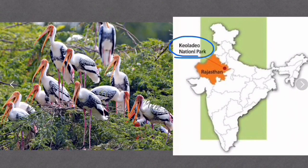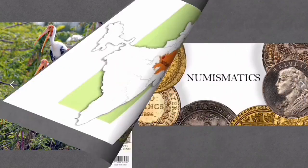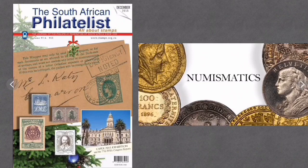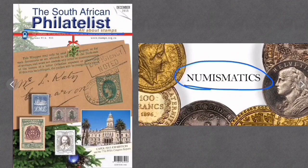Next: Keoladeo National Park is located in Bharatpur, Rajasthan. Also, those who study postal history are known as philatelists, and those who study coins and medals are known as numismatists.